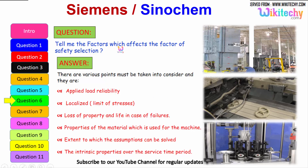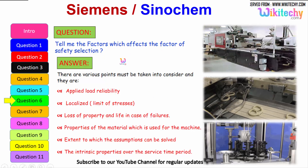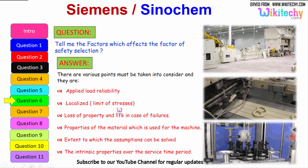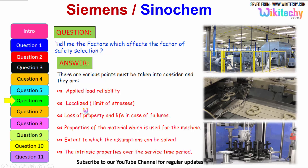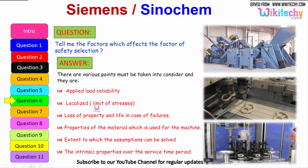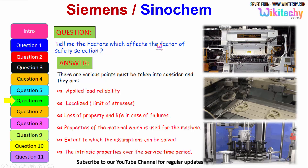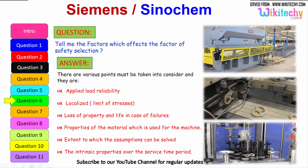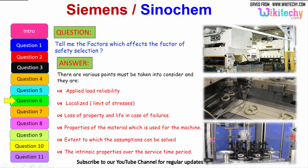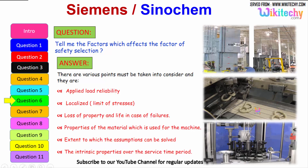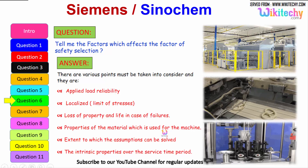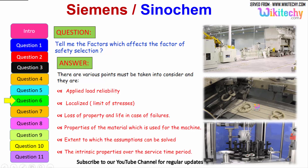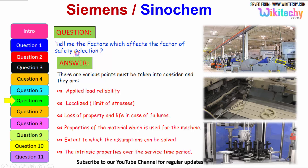Now let us see the factors which affect the selection of the factor of safety. These include: the reliability of the applied load, loss of property and life in case of failure, the properties of the material used for the machine, the extent to which assumptions can be validated, and the intrinsic property of the material over its service time period — how it will sustain loads over time.